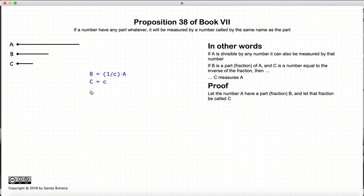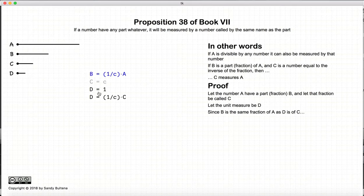So to demonstrate this, we start off with B is some fraction of A. We have the unit number is equal to D. Now B is a certain fraction of A, and D is the same fraction of C.